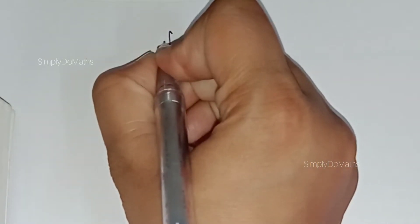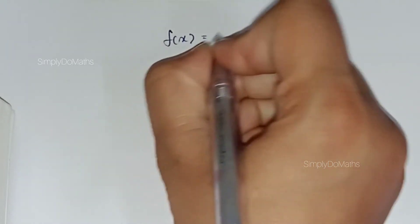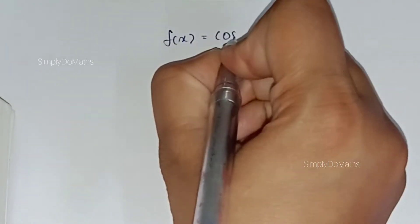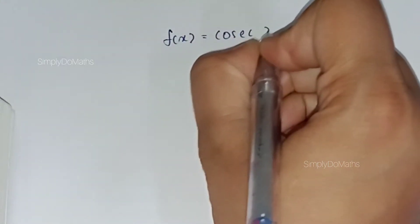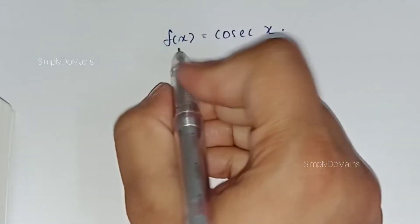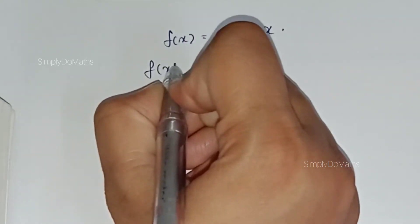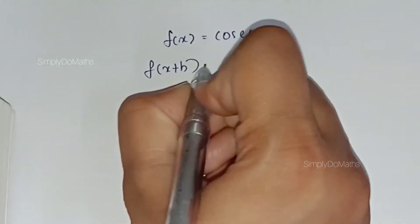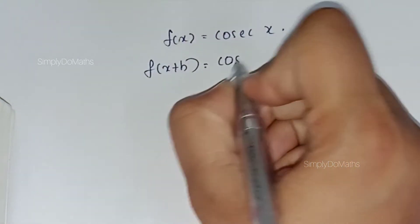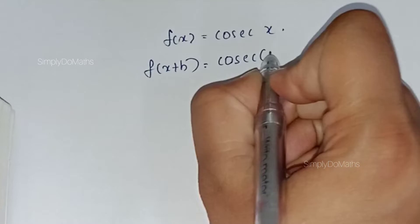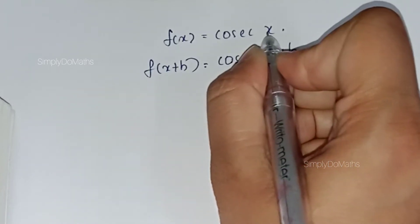As we know, the function cosecant x is a continuous function. So let us consider f(x) equal to cosecant x. We need f(x+h), so this will be equal to cosecant of (x+h) — in the place of x we have x+h.